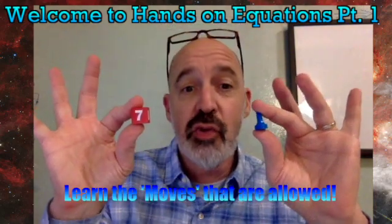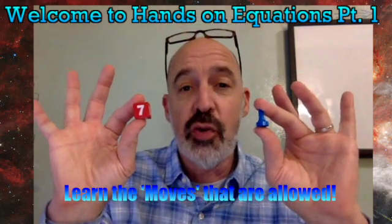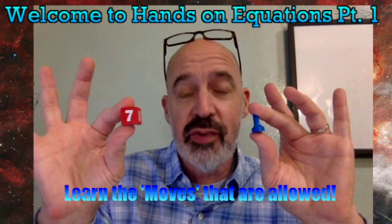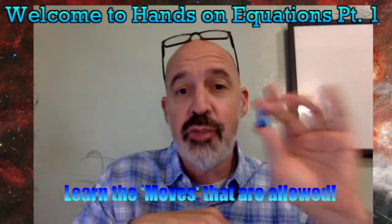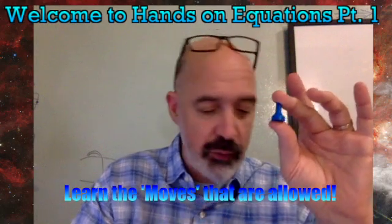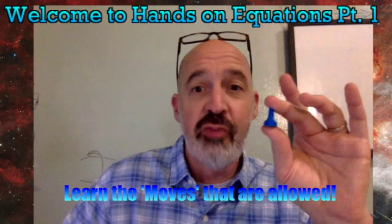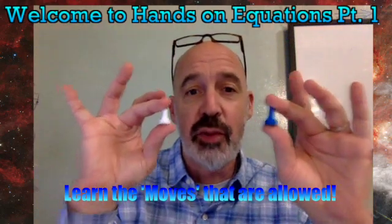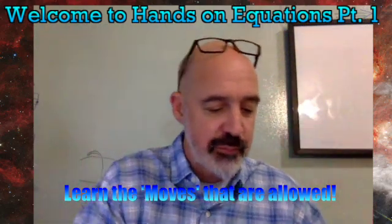The first thing to do is learn the moves that are allowed on the Hands-On Equations balance. This is a whole number cube. This pawn represents the variable we're going to be working with. Looking forward, this pawn represents the opposite of this one, so these are the opposite of each other, the same way that these two dice are also opposite each other.